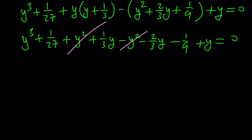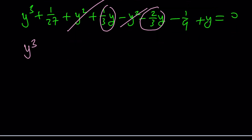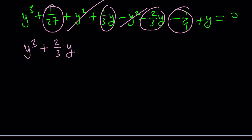Now, everything else we can put together. We have y cubed, and then we have one third of y minus two thirds of y, which gives us negative one third, and then plus y gives us two thirds of y. And as a constant, we have one over 27 minus one over nine, which gives us negative two over 27, but that's just going to be a constant on the right-hand side.